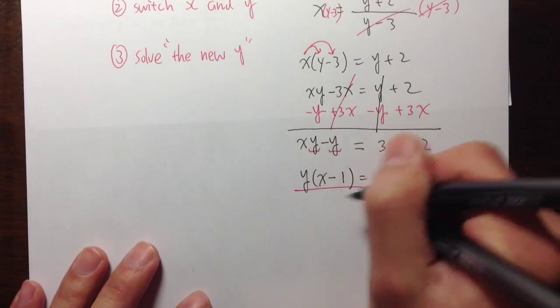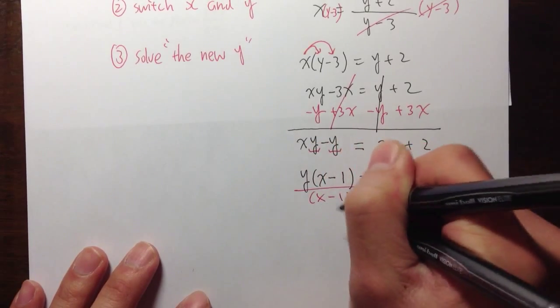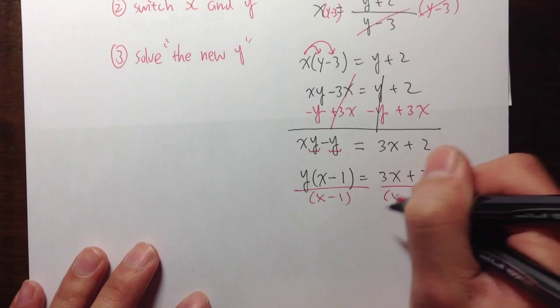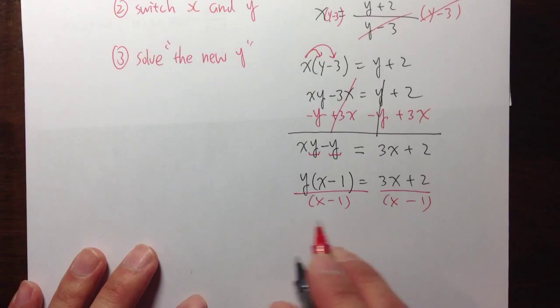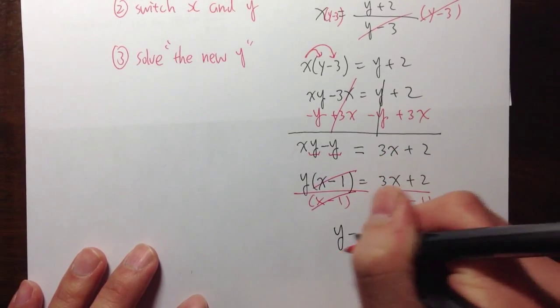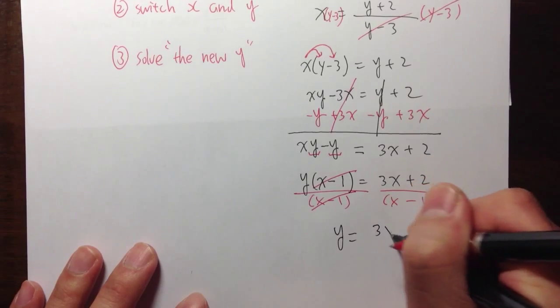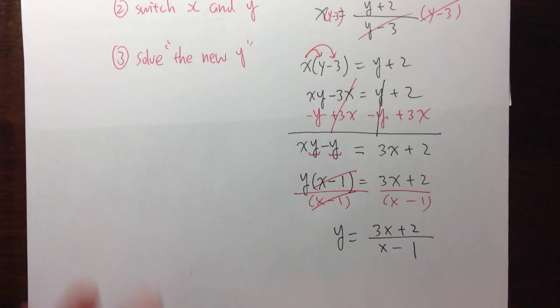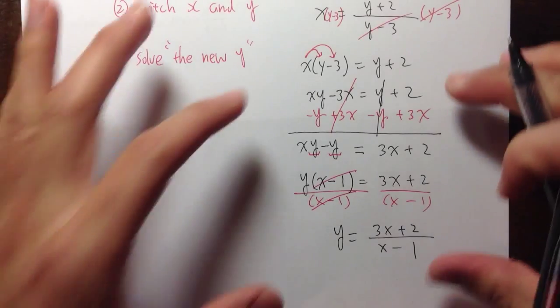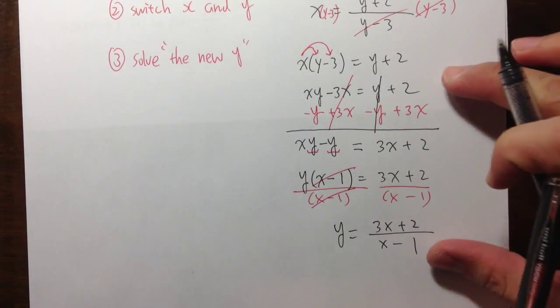Then, we can just divide both sides by x minus 1. Divide both sides by x minus 1. Because we have y times this, after we divide both sides by x minus 1, this two cancels. And I get y is equal to 3x plus 2 over x minus 1. This is the third step, the one that involves the most work.